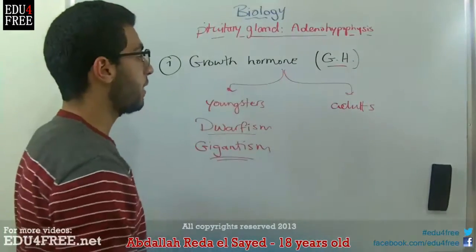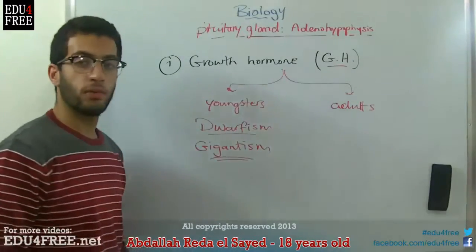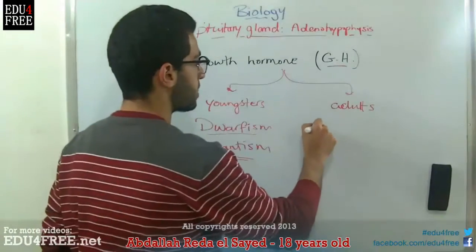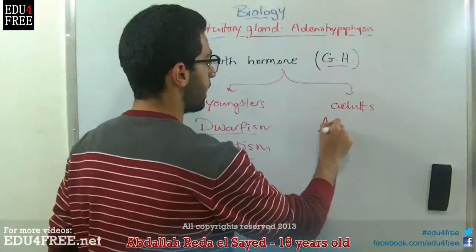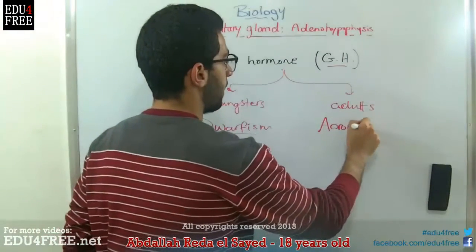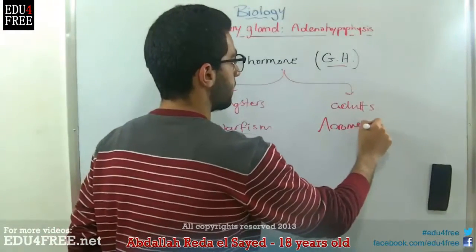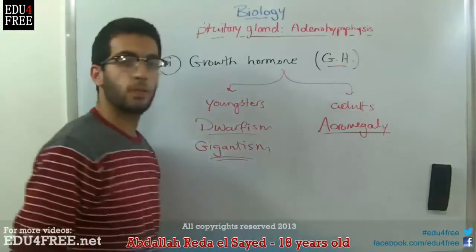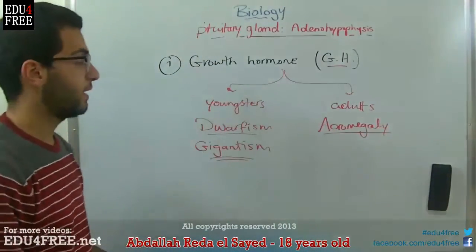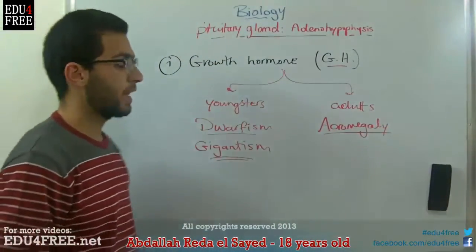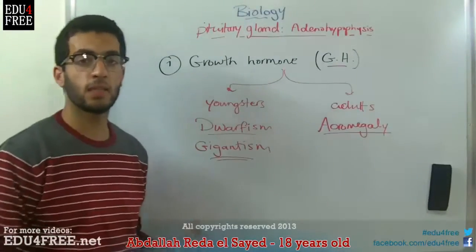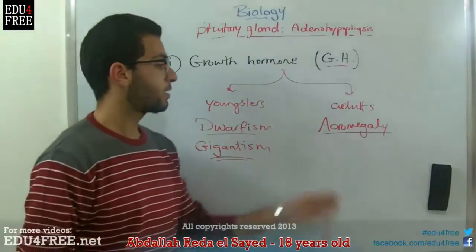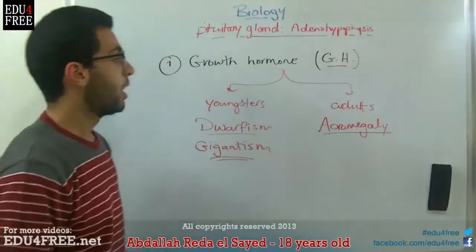In adults, if there is a hypersecretion of the growth hormone, this leads to a syndrome called acromegaly. This is characterized by enlarged bones at the extremities — large bones of the hands, feet, fingers, and bones of the face.